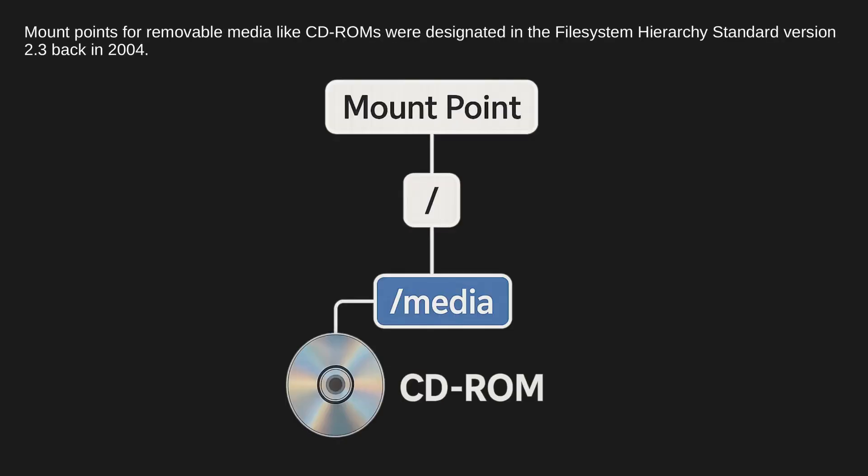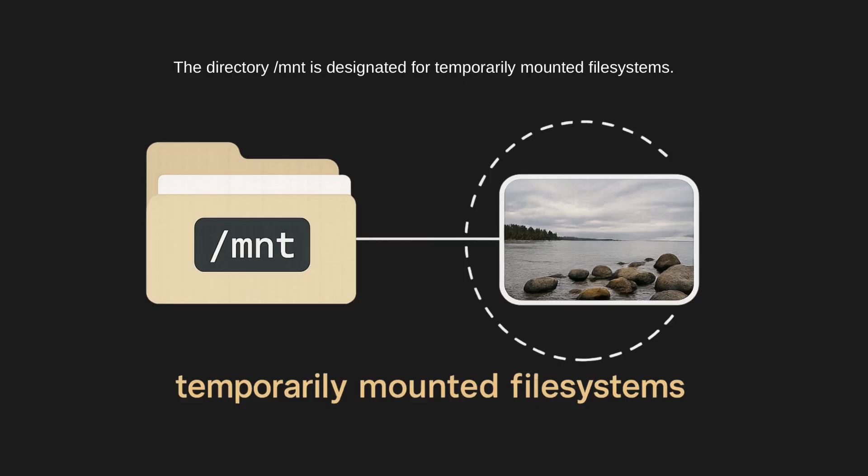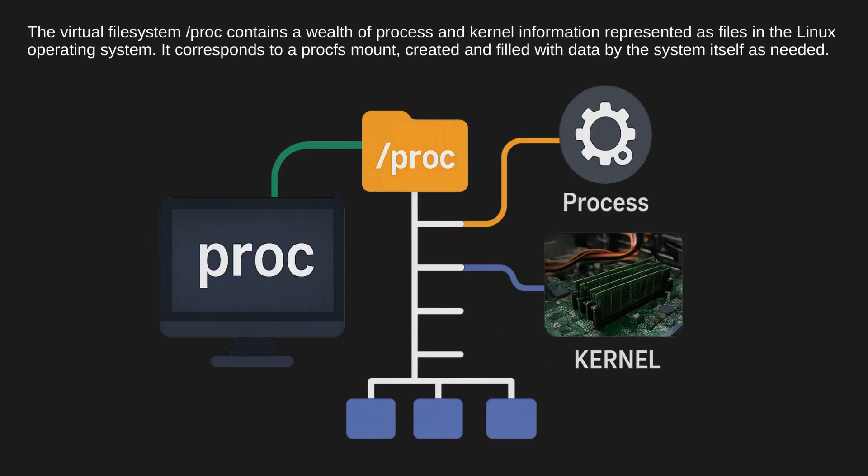Mount points for removable media like CD-ROMs were designated in the File System Hierarchy Standard version 2.3 back in 2004. The directory /mnt is designated for temporarily mounted file systems. The virtual file system /proc contains a wealth of process and kernel information represented as files in the Linux operating system. It corresponds to a procfs mount, created and filled with data by the system itself as needed.